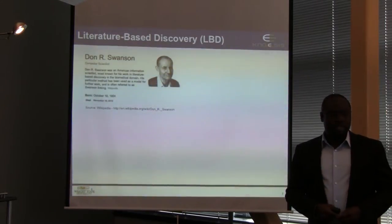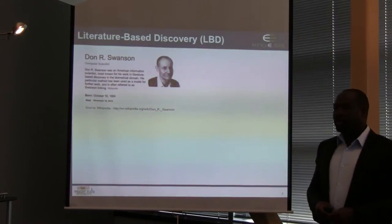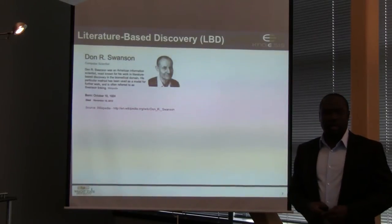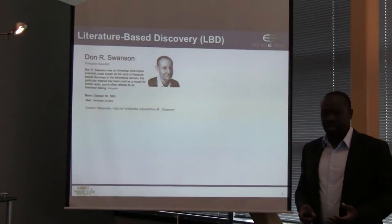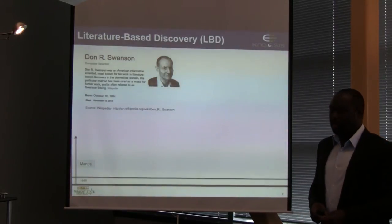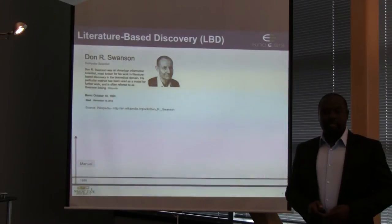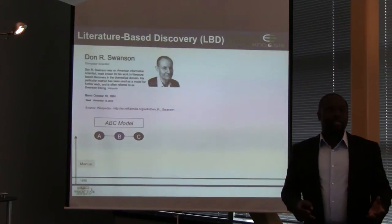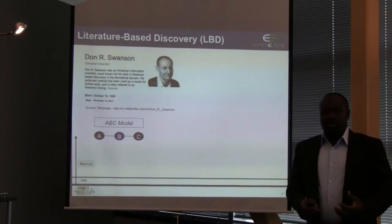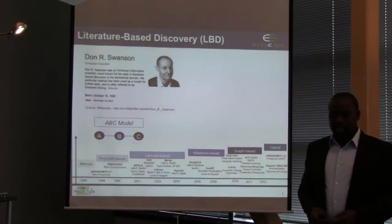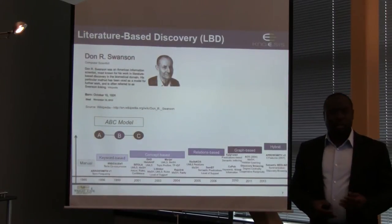Swanson, similarly to the Lancet authors, read the titles of over 4,000 articles on Raynaud and fish oil. By looking at intersecting terms in the titles, he was able to find three unknown connections between Raynaud and fish oil, which have since been published and are a staple of that research. Swanson formalized his observations as the ABC model for literature-based discovery: if we can find unknown B terms between A and C, then those B terms are candidates for discoveries.